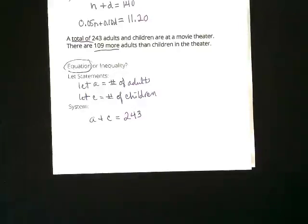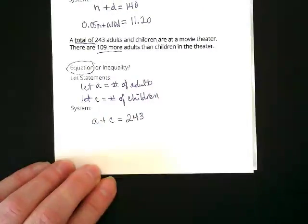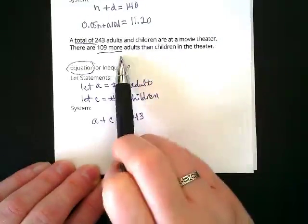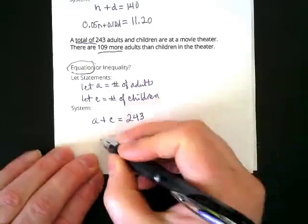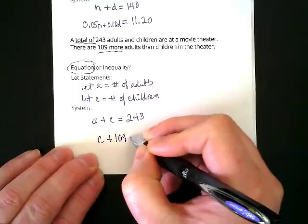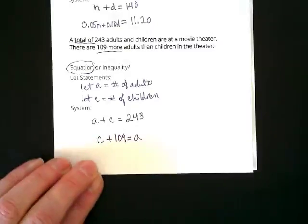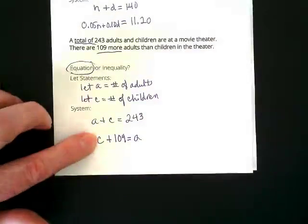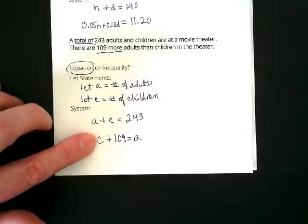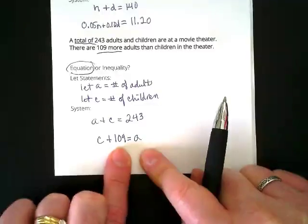What are we going to do with that 109? It goes into our second equation. I'm not going to subtract. We will have to solve later. Remember, the opposite is how we end up solving. What does this say here? More. More. I'm going to say that there are children plus 109 more adults equals the adults. The number of children, we don't know what that is, but we know that there's 109 more adults than there are kids. So, the adult total is all the kids plus 109 more people.